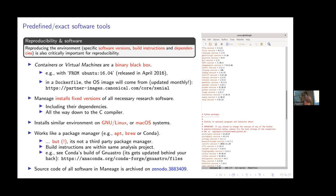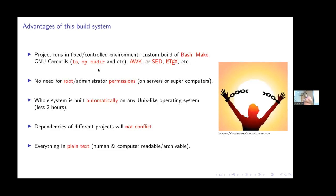We even build our own C compiler. We don't use your operating system's — well, initially we use your OS C compiler to build the C compiler, but after that everything, all high-level software, is built with a custom C compiler whose version is the same between all different users. This includes everything: we even install the coreutils — LS, CP, MKDIR. Have you noticed that MKDIR operates differently on different computers? There's no need for root permissions. When you go to a large HPC, you don't have to spend time with the HPC administration. Everything is built in one build directory; each project can have its separate build directory so nothing conflicts.